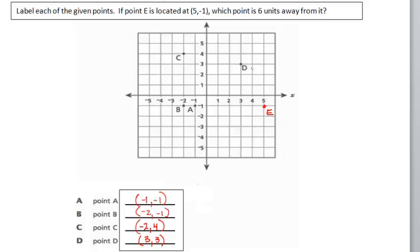They want to know which point is located 6 units away. I look at all the points, and these 2 points are the ones located exactly across from point E. So let's count: 1, 2, 3, 4, 5, 6. Point A is located exactly 6 units away from point E. So for the second part of this question, the answer would be point A.